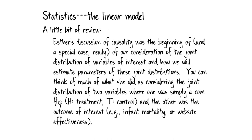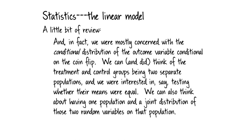If you flip the coin and it comes up heads, that's a treatment — that observation has a treatment. And if it comes up tails, that observation is assigned to control. The other random variable defined on this sample was the outcome of interest — say, infant mortality or website effectiveness. We were mostly concerned with the conditional distribution of the outcome variable conditional on this coin flip. We could think of the treatment and control group as two separate populations and ask how we could test whether they had a common mean.